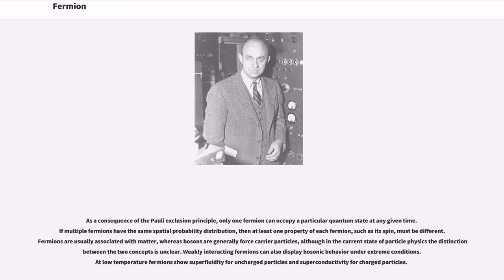As a consequence of the Pauli exclusion principle, only one fermion can occupy a particular quantum state at any given time. If multiple fermions have the same spatial probability distribution, then at least one property of each fermion, such as its spin, must be different. Fermions are usually associated with matter, whereas bosons are generally force carrier particles, although in the current state of particle physics the distinction between the two concepts is unclear.